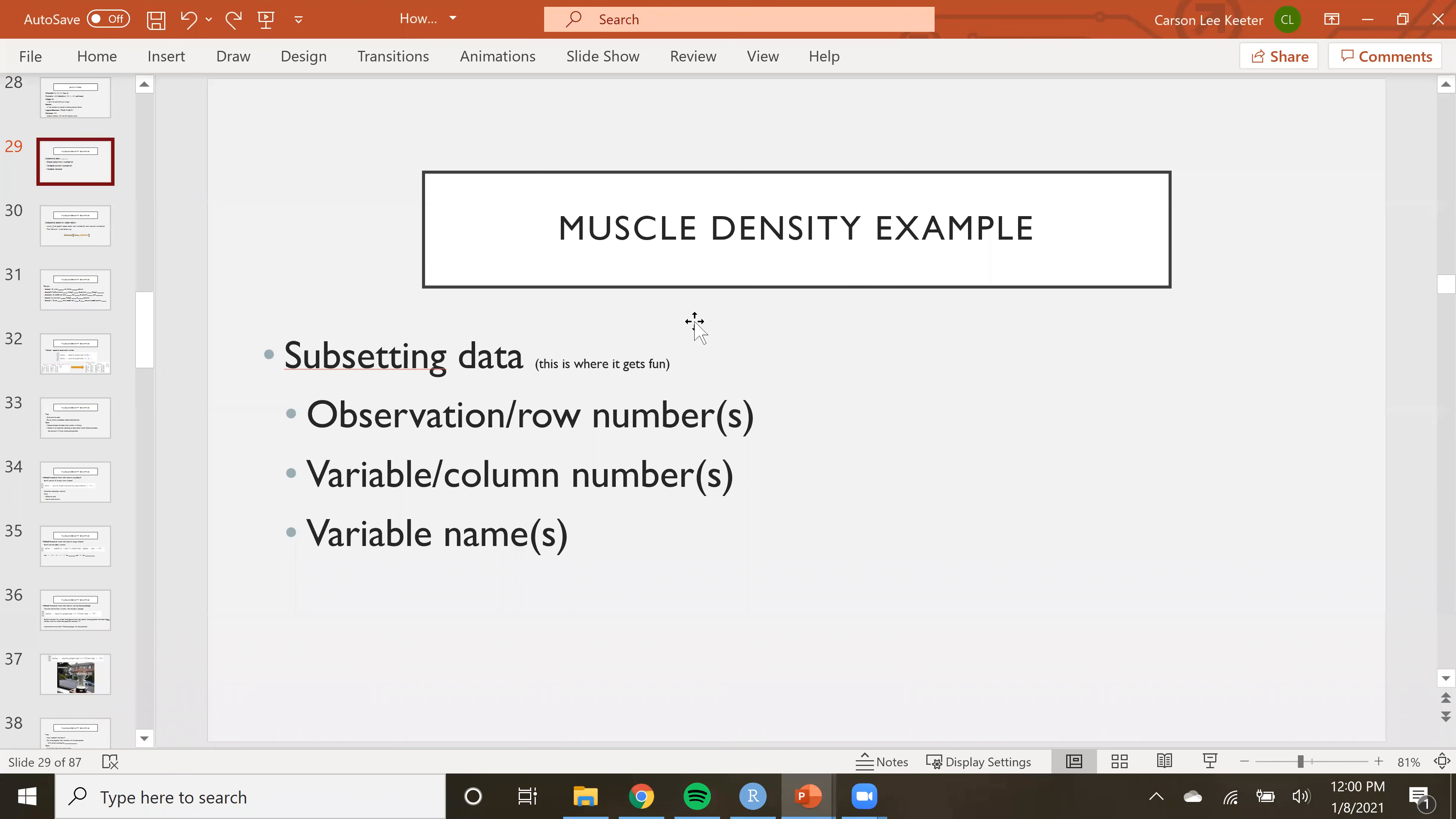So how are we going to do that? We have tons of ways to subset the data. We can do it by the row number and the column number or the observation and the variable. But we can also do it by the name within the column, which is like M or F or whatever. Which is pretty great. So there's a ton of different ways. Some of them are very intuitive. Some of them ain't. So let's get into it.